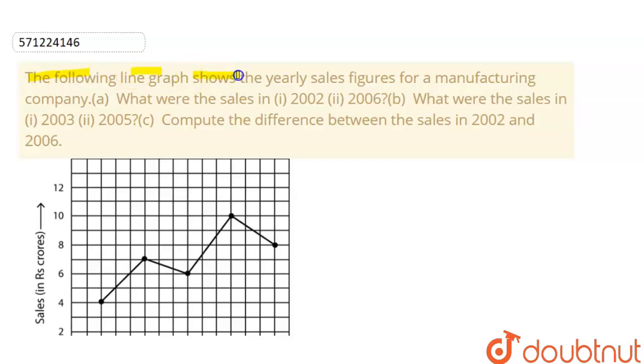The following line graph shows the yearly sales figures for a manufacturing company. Part A is: what are the sales in 2002 and 2006?